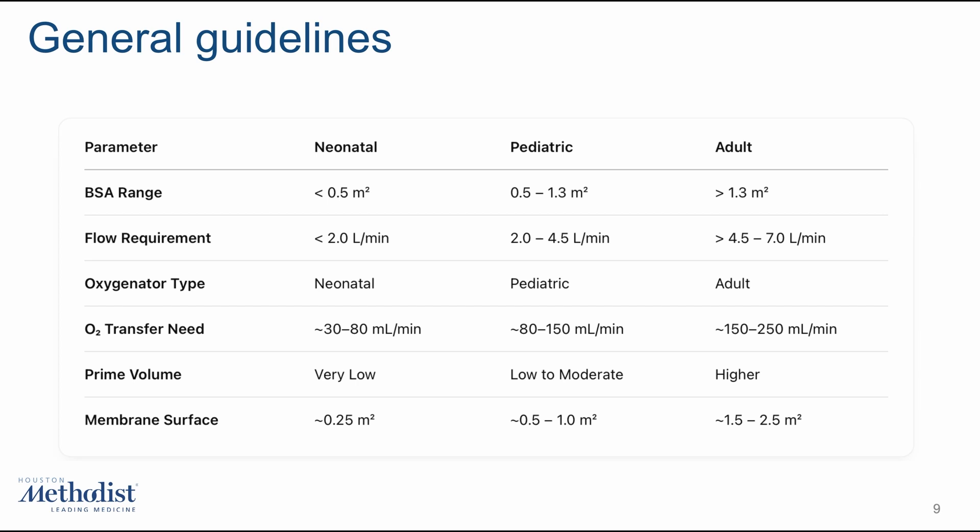For adult patients, the oxygenators must support higher flows, often above 5 liters per minute, and provide sufficient oxygen transfer, typically in the range of 150 to 250 mL/min. These oxygenators have a larger surface area and higher prime volume, which is acceptable given the patient's overall blood volume. It's also important to consider the oxygenator's resistance to flow and gas exchange capacity. Always ensure the model you choose can deliver the necessary oxygen and remove enough carbon dioxide for the specific patient, especially during long or complex bypass procedures.